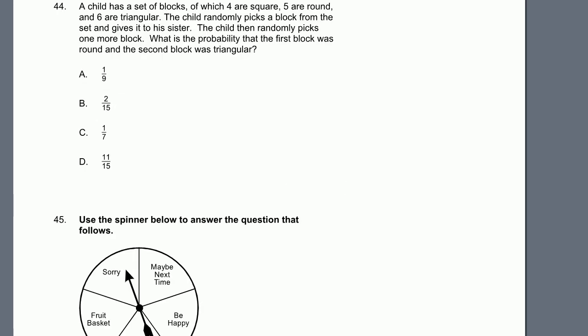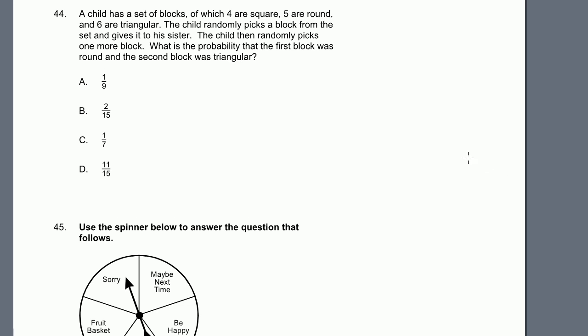Problem 44. A child has a set of blocks, four of which are square. So we have four square. Five are round. And six are triangular. The child randomly picks a block from the set and gives it to his sister. The child then randomly picks one more block. So he didn't put that block back in. That's very important. What is the probability that the first block was round, and the second block was triangular?